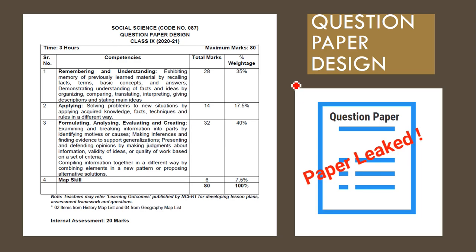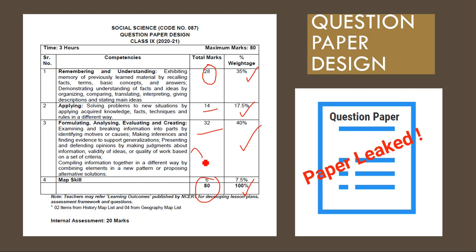Your question paper will follow the same pattern as the 10th standard — this is the board pattern. There is no chapter-wise blueprint available. The paper is for 80 marks, with 20 objective-type questions — 10 MCQs and 10 other objective-type questions — and the percentage weightage is shown here.